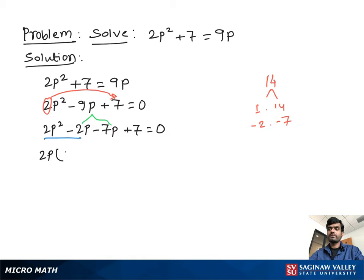From this pair, we take out 2p as a common. We have p minus 1. From this pair, we take out negative 7 as a common. We have p minus 1, all equal to 0.